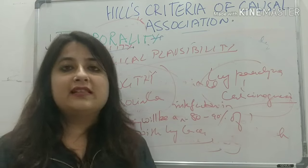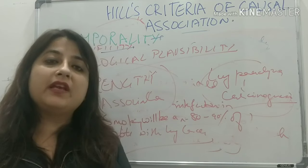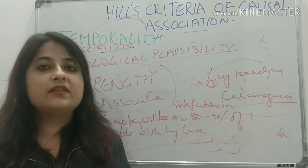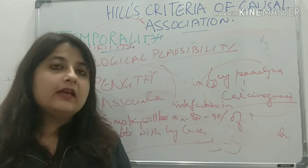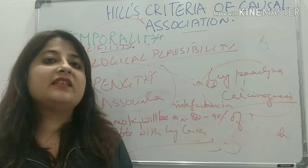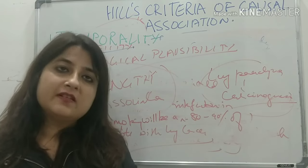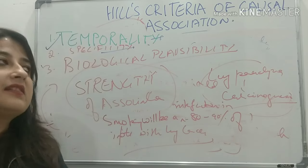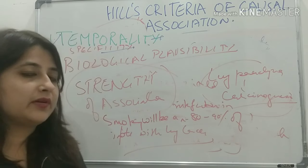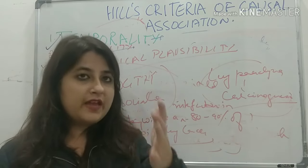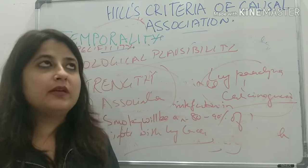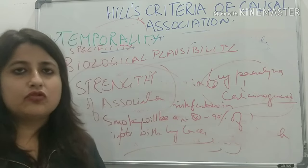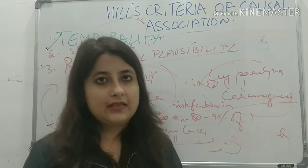This was about Hill's criteria. Ten-mark questions and important MCQs come from this topic. Remember: most important criterion is temporality; most difficult to establish is specificity. If you have any comments, drop them in the comment section below. I hope you liked this video. Thank you so much for watching.